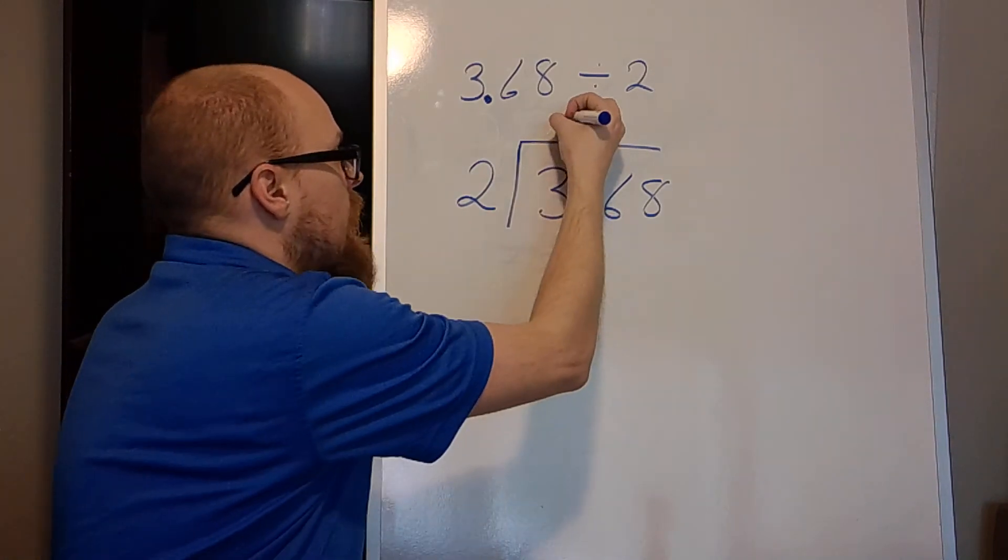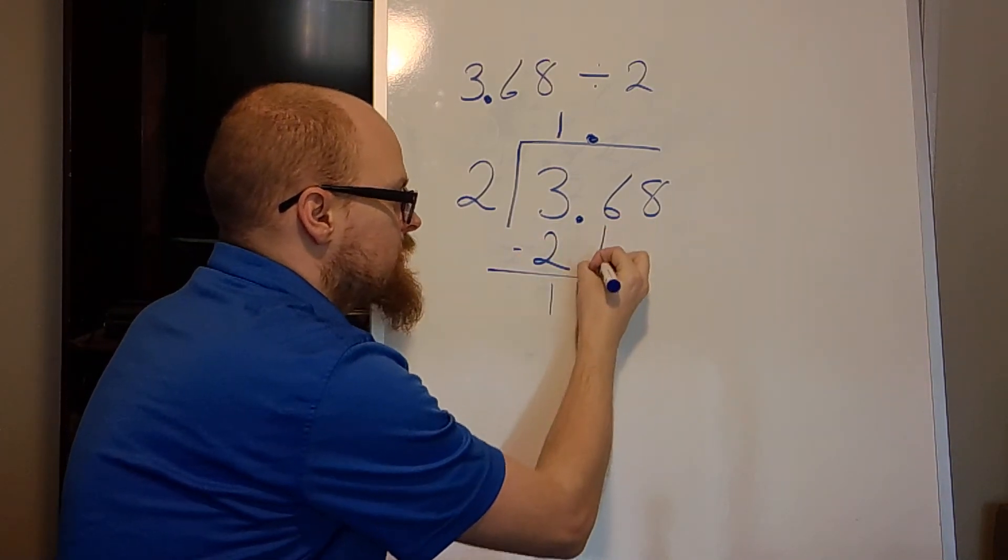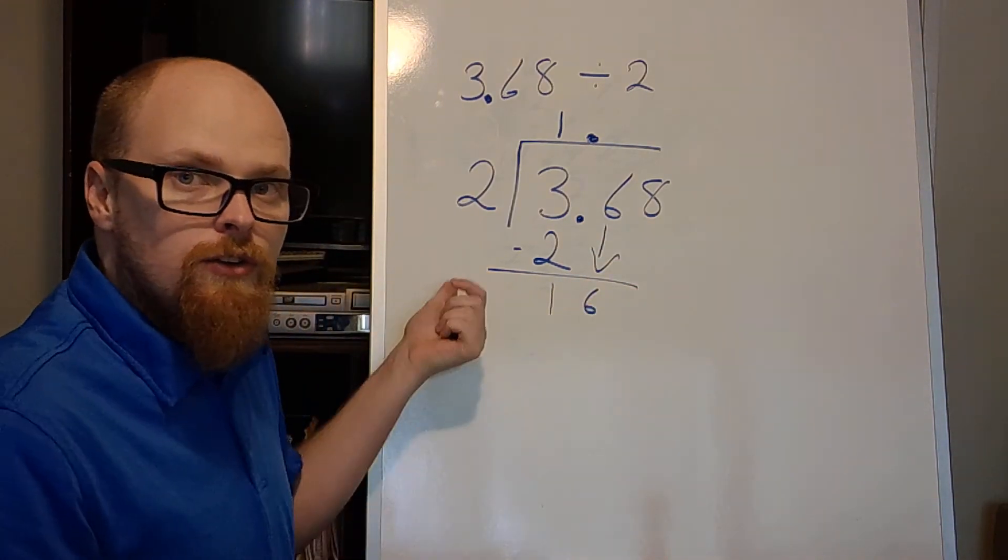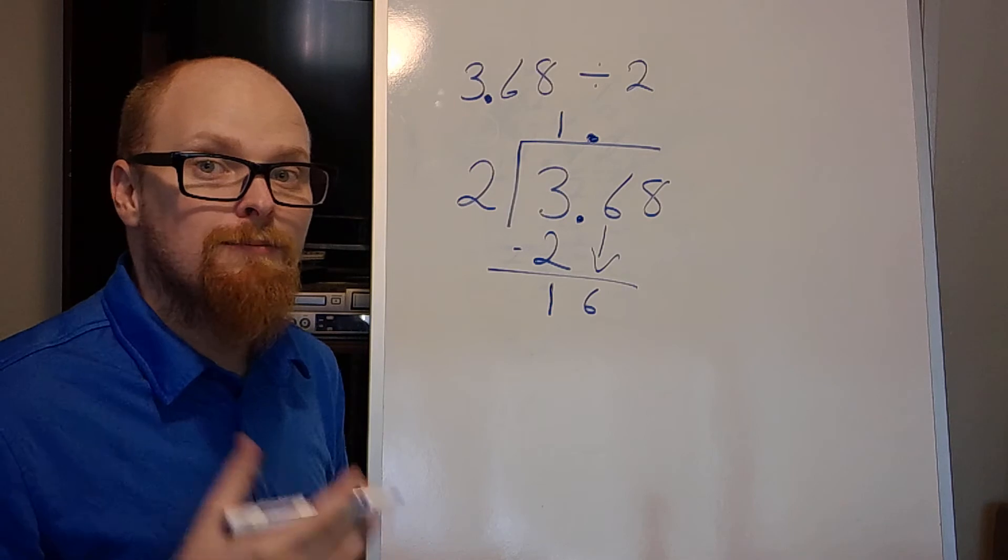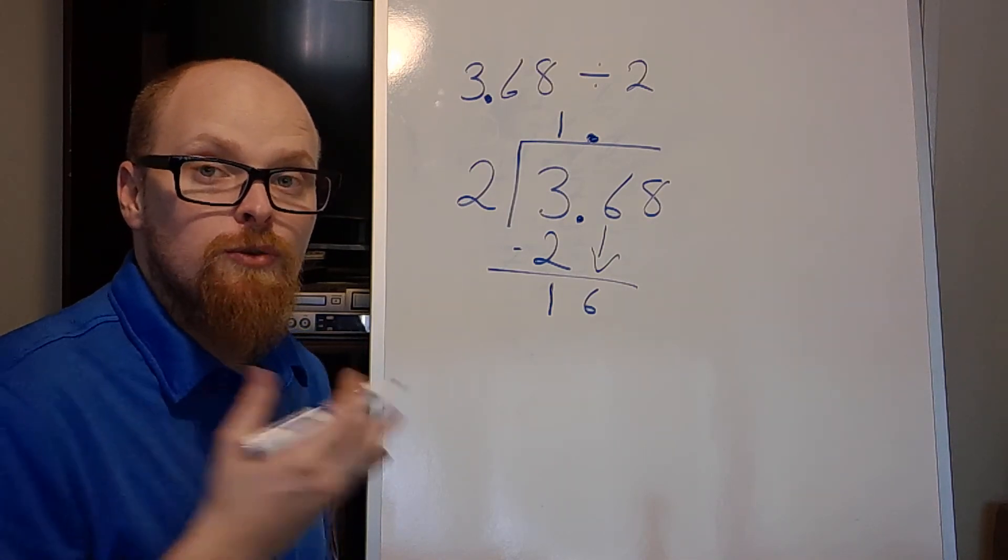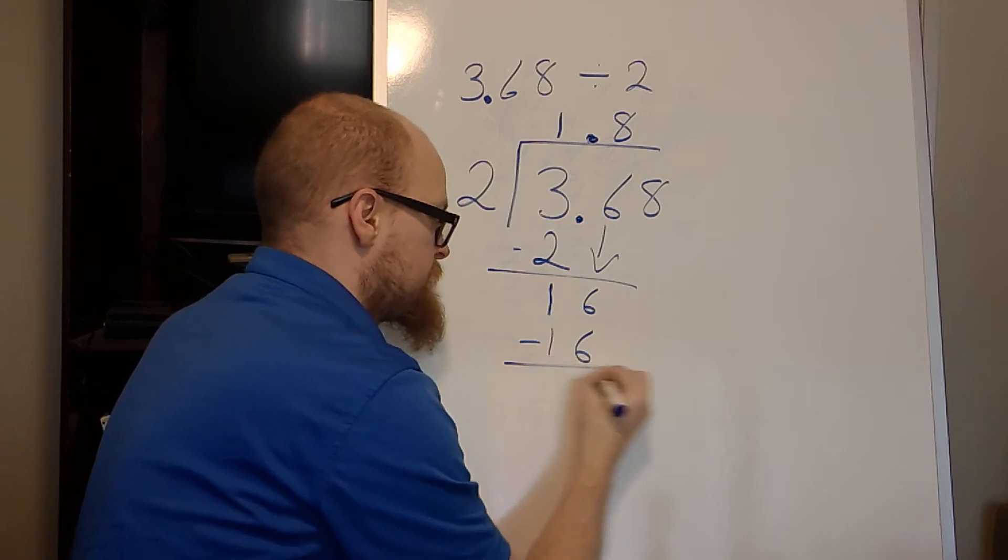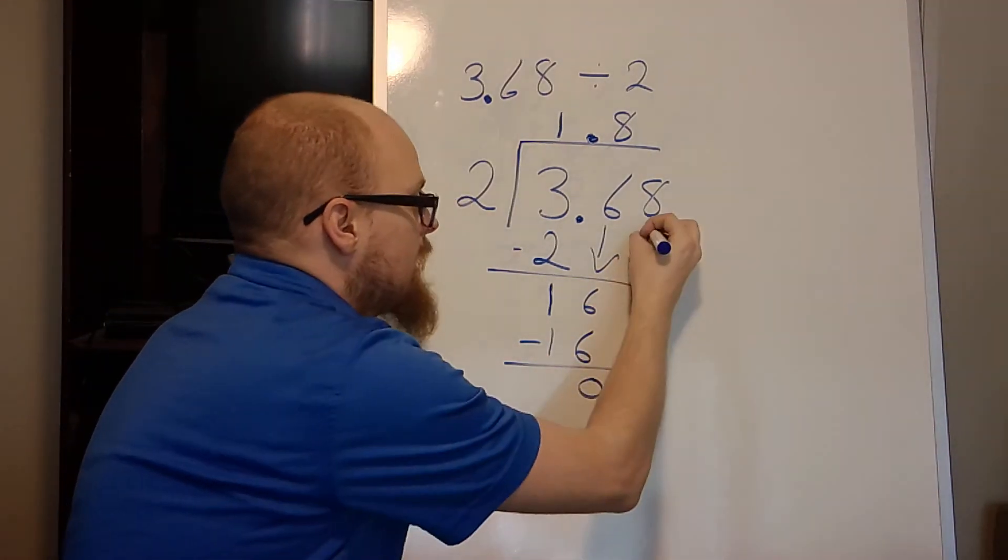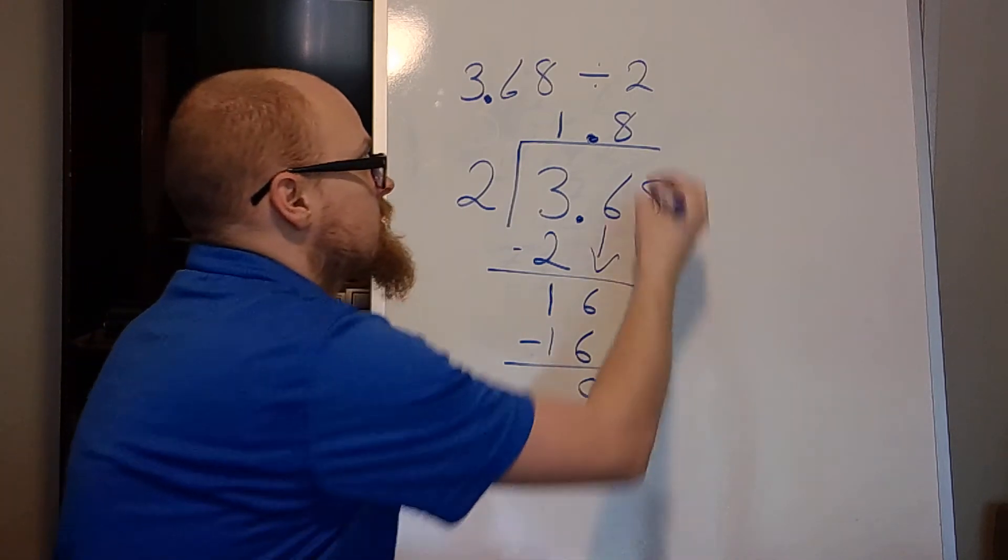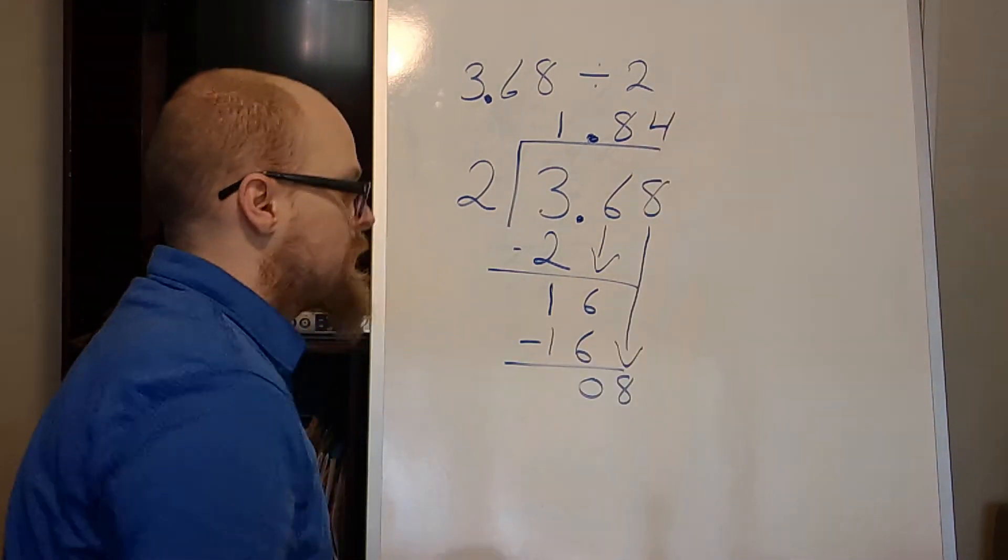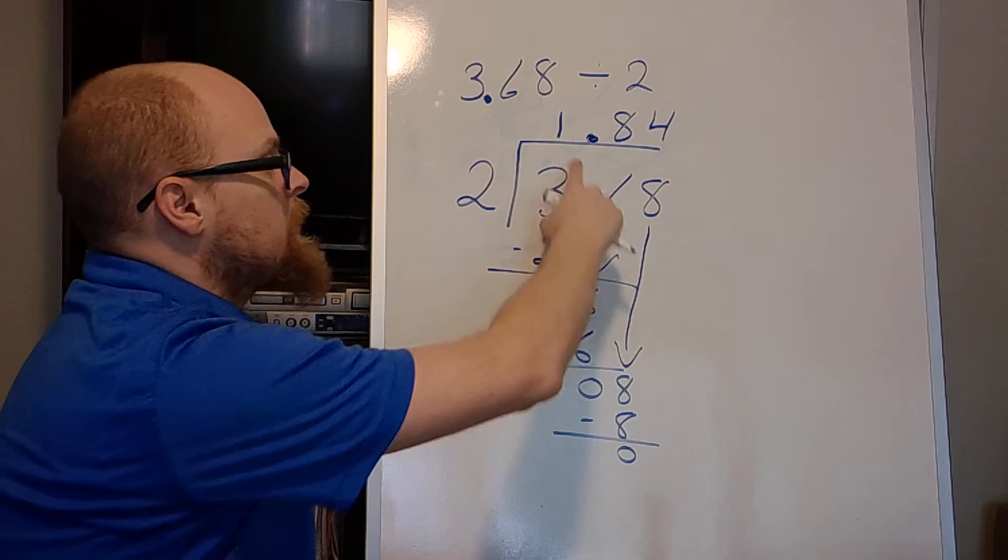2 goes into 3, 1 time. 1 times 2 is 2. I subtract that. I'm left with 1. I bring my 6 down. So I have 16 now. 2 goes into 16 how many times? I can remember 2 times 8 is 16. So I know it will go in there 8 times. And I will subtract 16. In this case, I'm about to move it to 0, which is fine. I bring that 8 all the way down. And now I'm going 2 into 8. And I remember 2 times 4 is 8. So I know my final answer up there is 4.